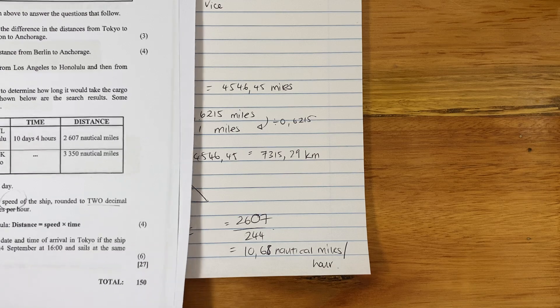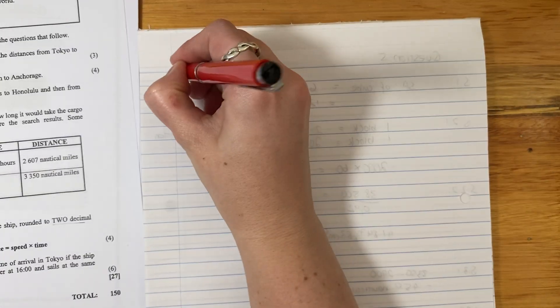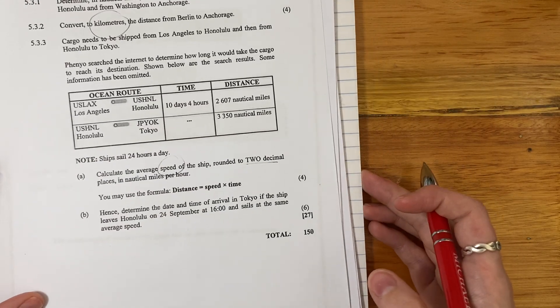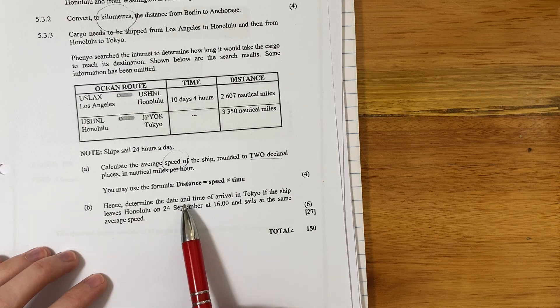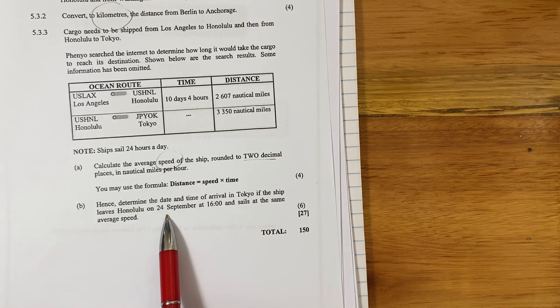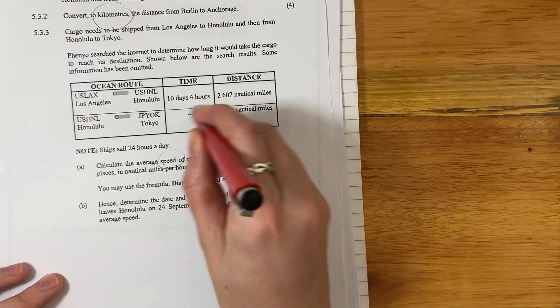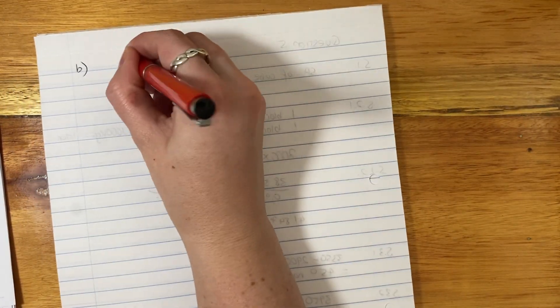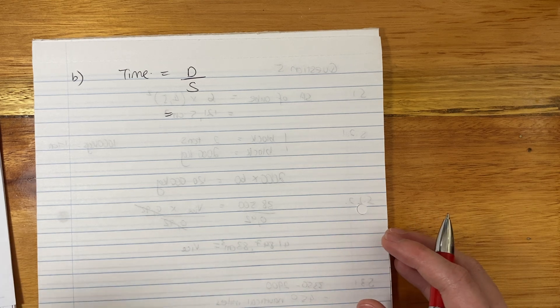Let's move on to B. B is six marks. So we know that we're probably going to have to do a bit of working out, but that's okay because we're at the end and we're happy to finish off and finish off strong. So let's read the question. Hence, when it says hence, it means please use your answer from the previous question. Hence, determine the date and time of arrival in Tokyo. If the ship leaves Honolulu on 24th September at four o'clock and sails at the same average speed as it did in its previous voyage. So now we need to basically work out what this guy is. We're working out time. We go back to our beautiful little triangle and time equals distance over speed. So we're going to say here, time equals distance over speed. And thankfully we have both distance and speed because we calculated speed in our previous question.